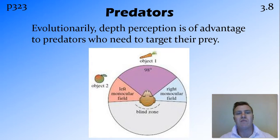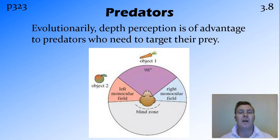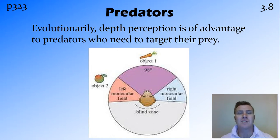The evolutionary advantage of having this three-dimensional vision is really good for predators. It means that if we've got something in front of us that we want to eat or we want to throw a spear at, we are going to be able to tell how far away from us that is. The downside to this stereoscopic vision is that in front of us we have very good vision with depth perception, but we have a really large blind zone to our back — which is fine for predators.